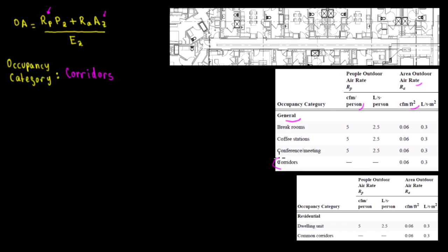This table is from ASHRAE, and as you can see, corridors appear under the general category. You can also find them under residential if it's in a residential unit — for example, in a mixed-use building where the lower level is retail and upper floors are residential. The corridor shown here is 1020 square feet, which comes from the architect's drawings.